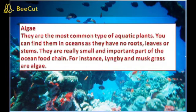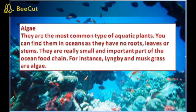Algae. They are the most common type of aquatic plant. You can find them in the ocean as they have no roots, leaves or stems. They are a really small but important part of the ocean.